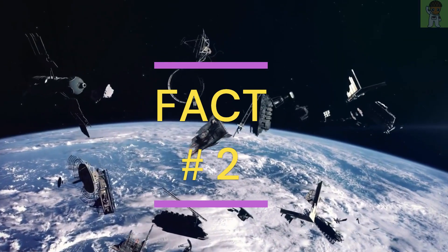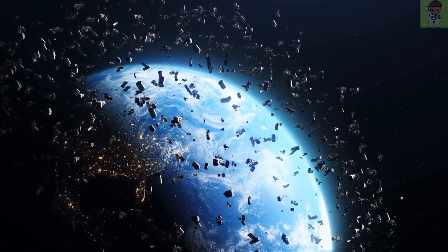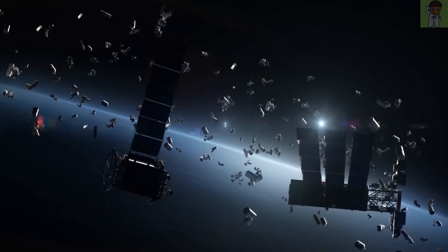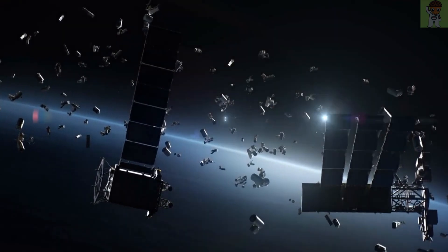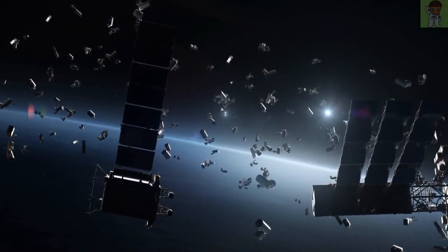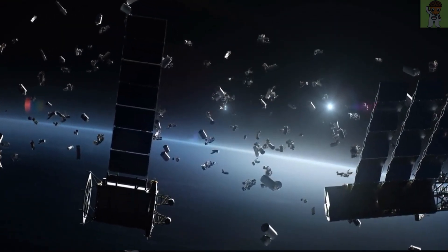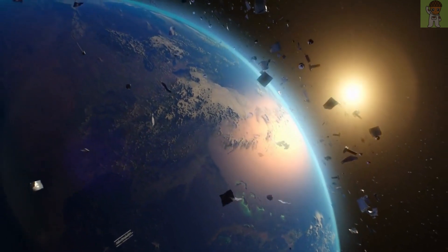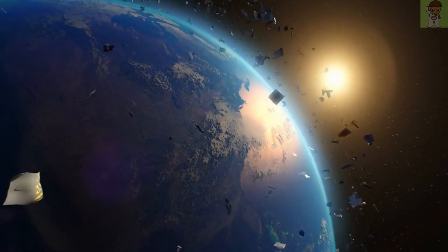Fact number 2. Did you know that there's a wall of space junk surrounding Earth? Over the years, humans have launched thousands of satellites and pieces of space debris into orbit around our planet, creating a dense layer of space junk that poses a risk to future space missions.